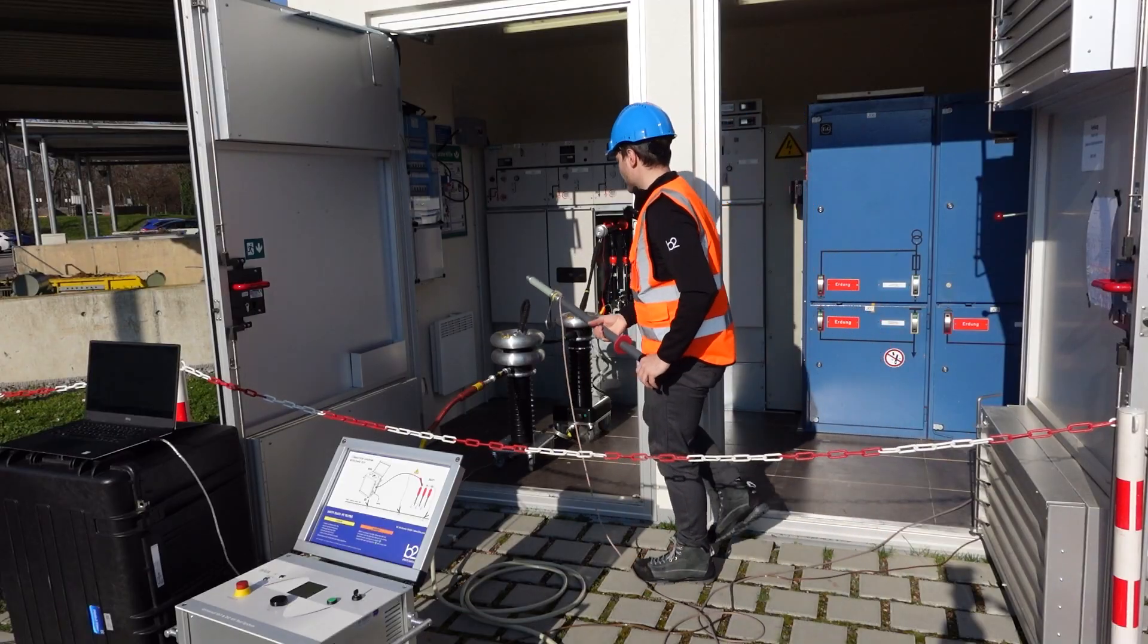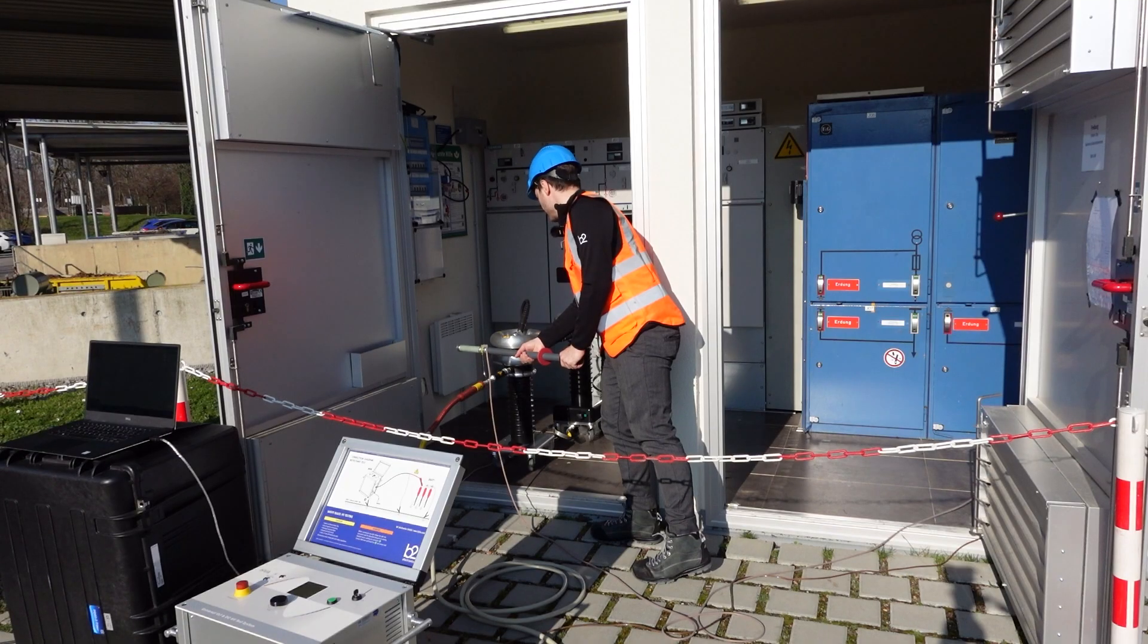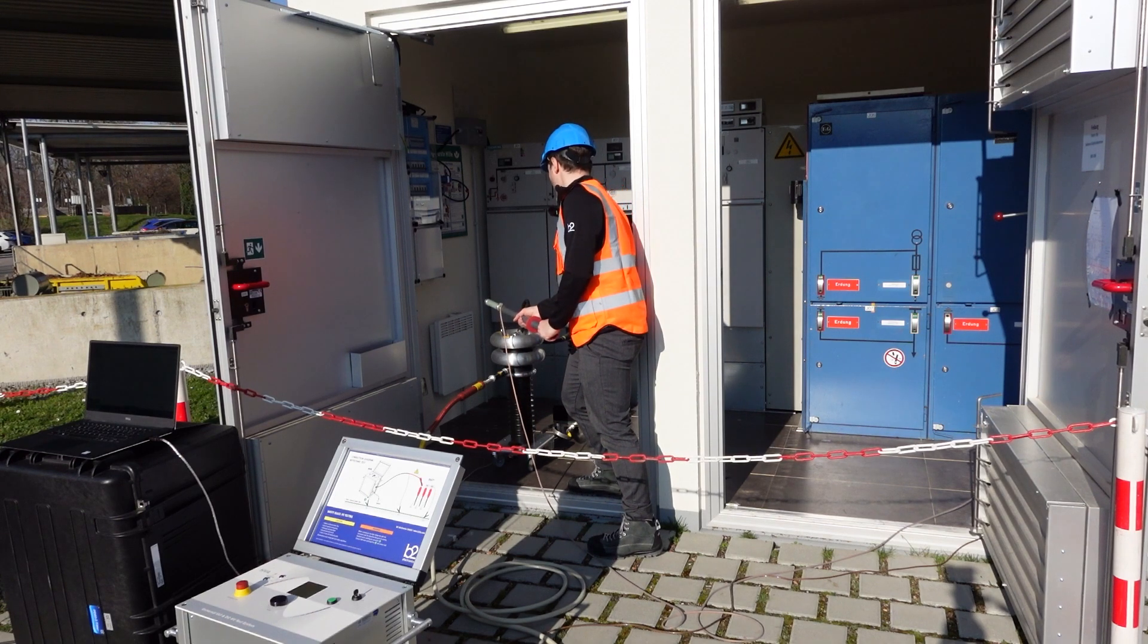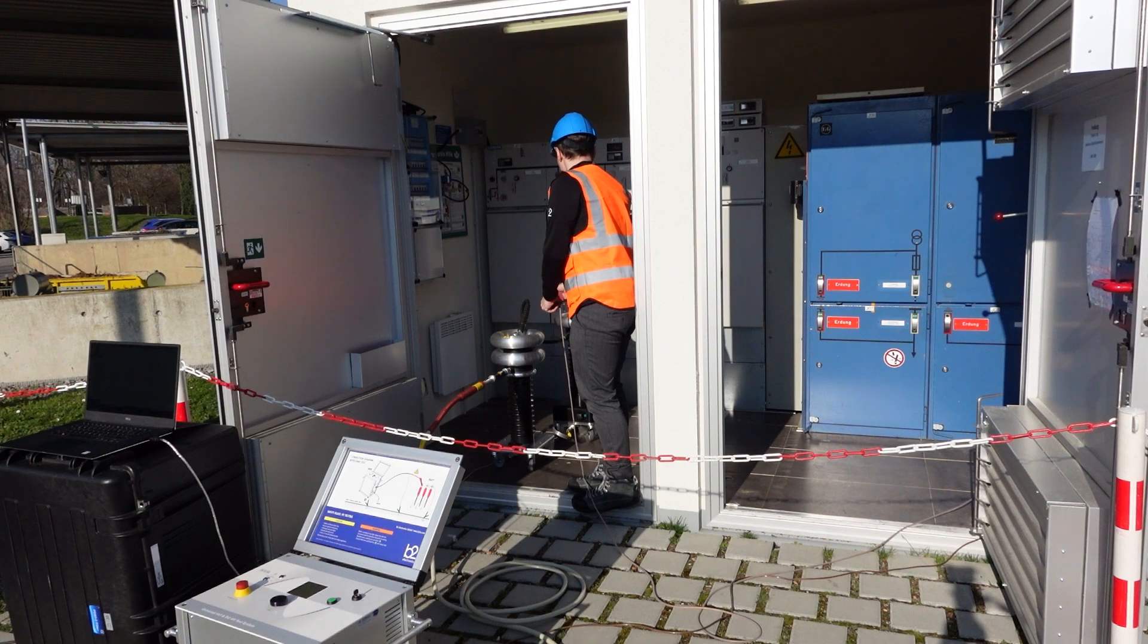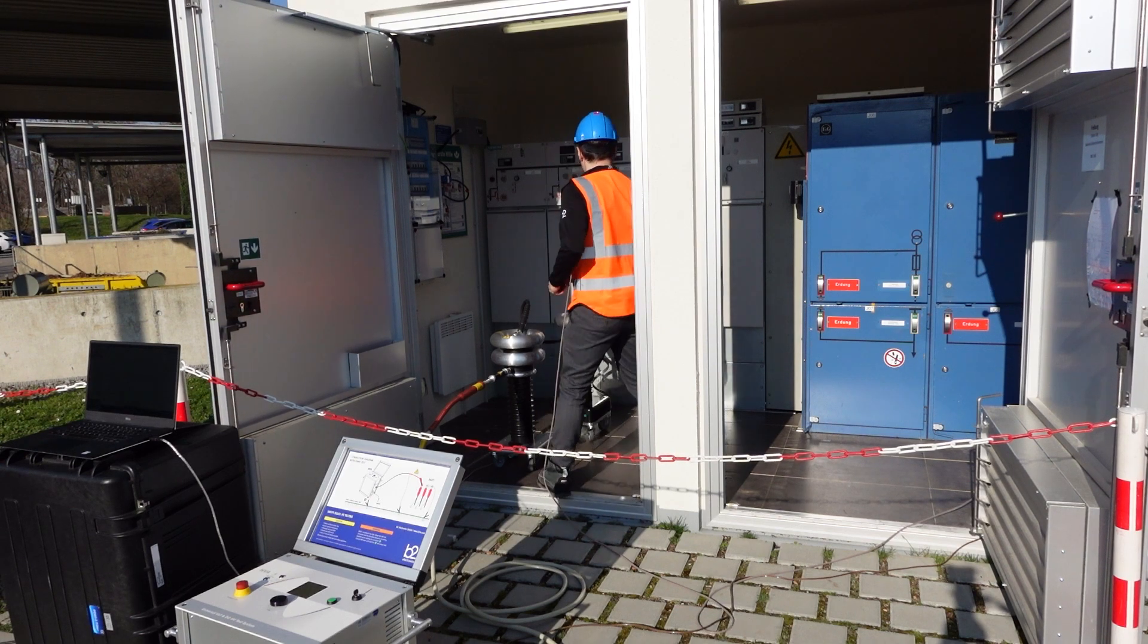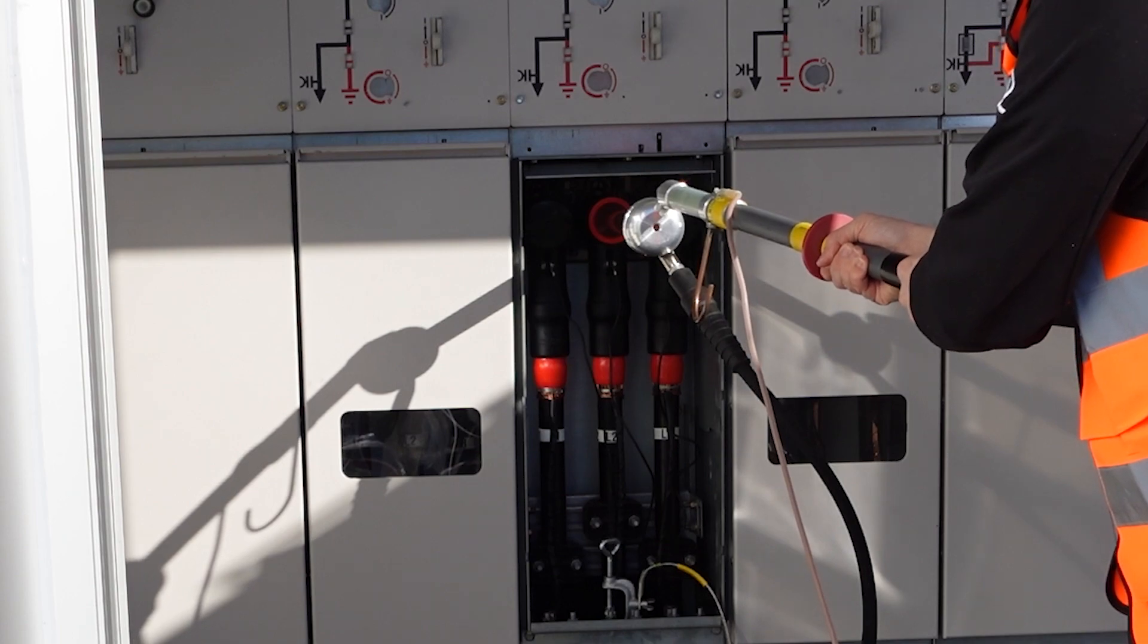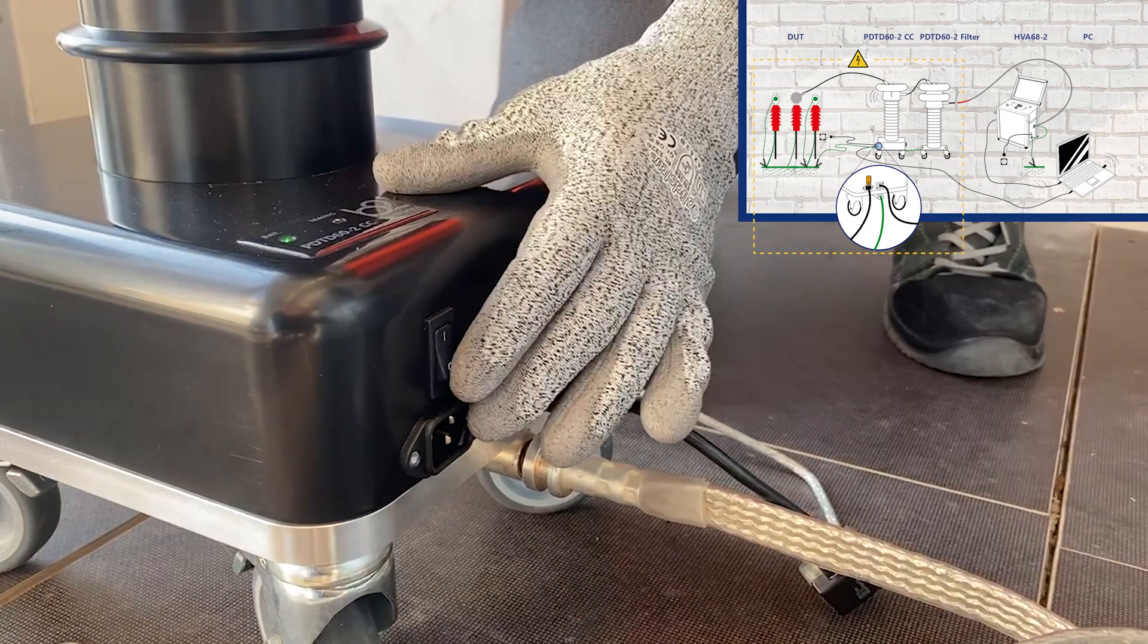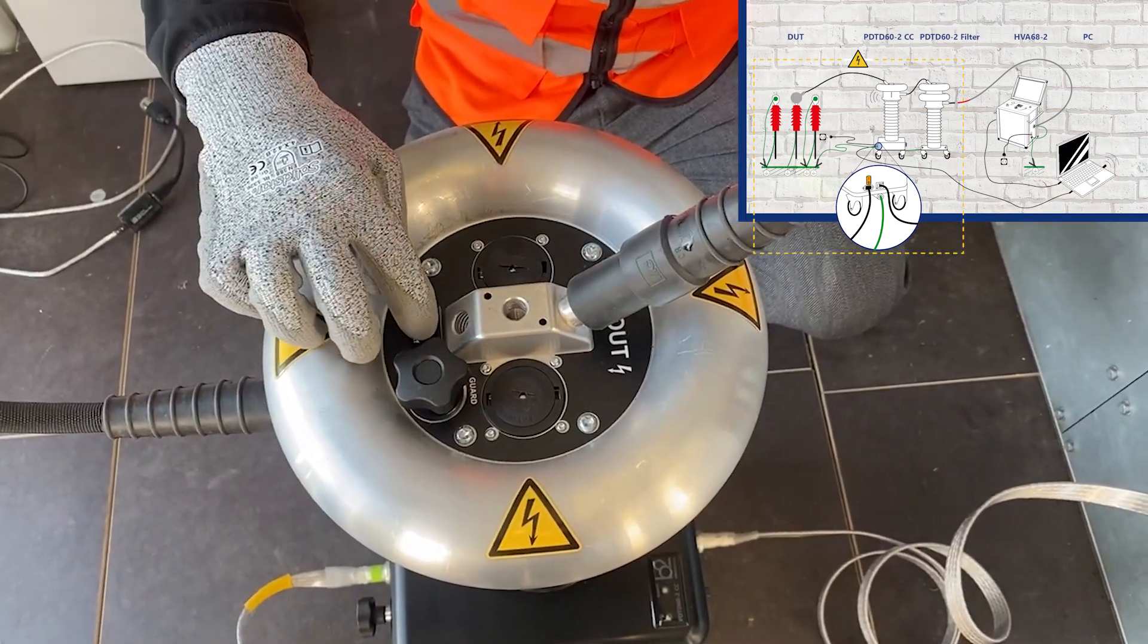Before we switch off the PD unit, we discharge and earth the DUT. Then we turn off the PD main switch and afterwards the TD main switch.